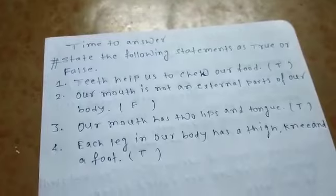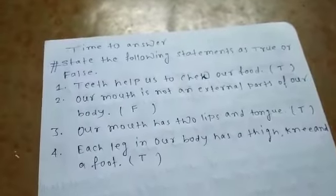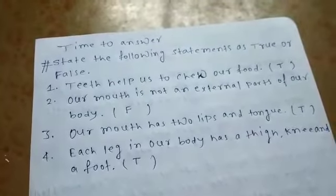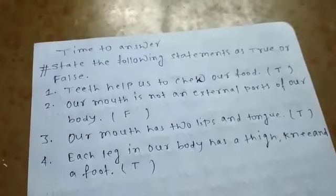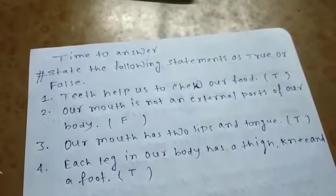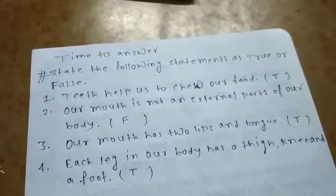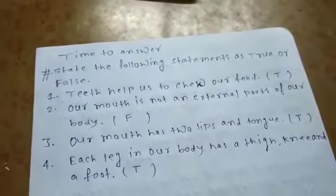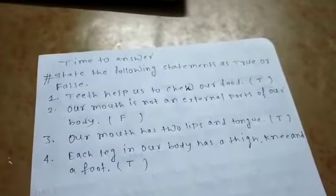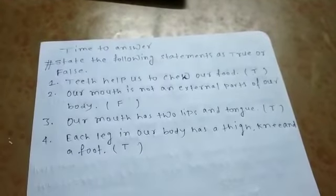Our mouth is an external part of our body, so that statement is false. Our mouth has two lips and a tongue — that is a true statement. A leg consists of a thigh, knee, and foot — that is also true. Thank you.